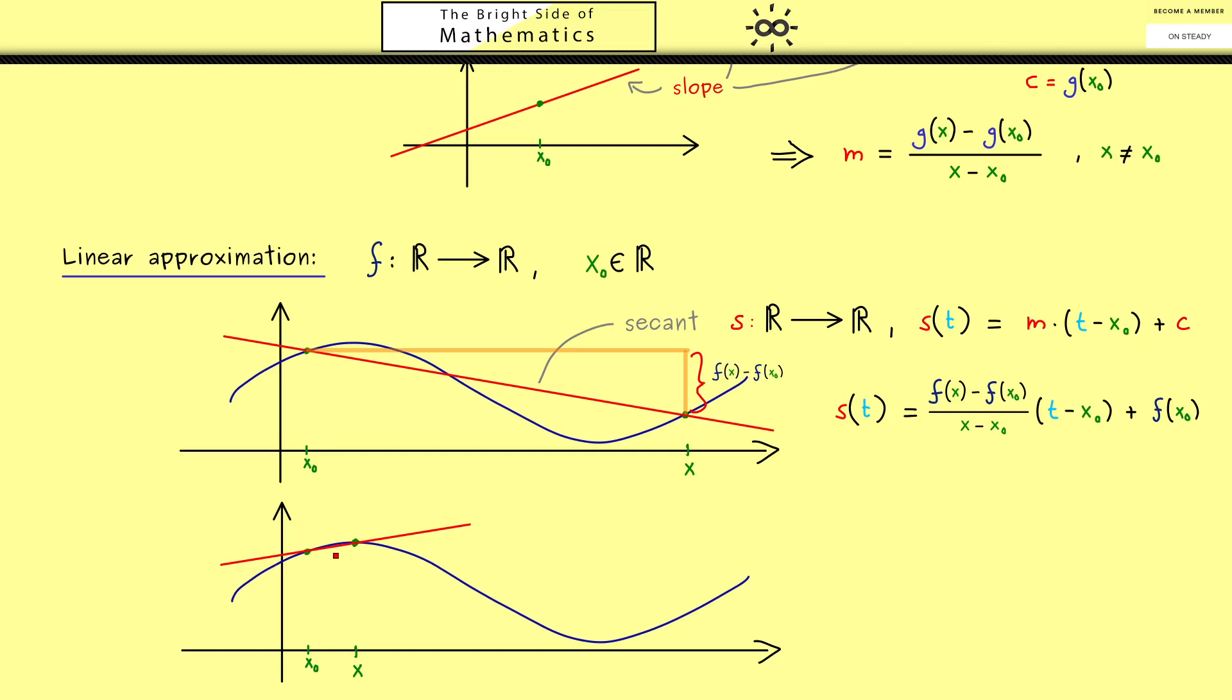This is very common but there are also other notations one uses. For example as a reminder to the difference quotient one also uses df divided by dx. And then we just put the point x₀ afterwards.